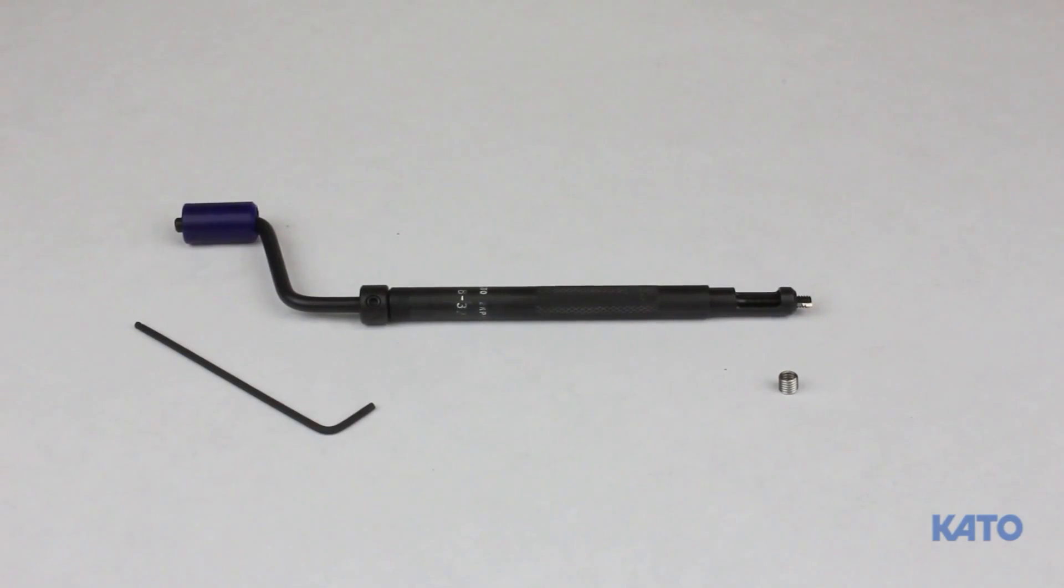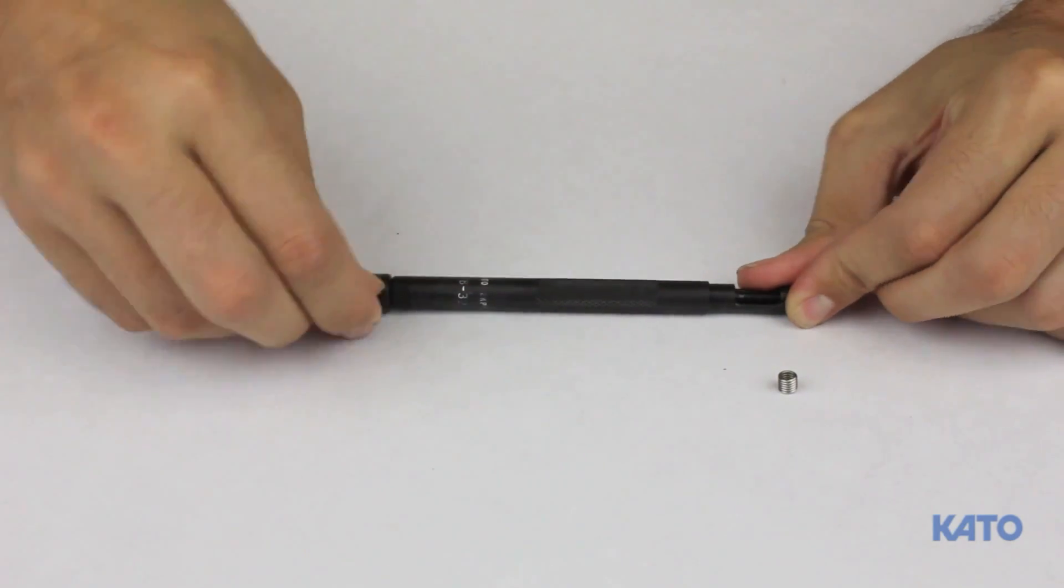Now we'll demonstrate how to set the correct installation depth using the tangless installation tool. The procedure is the same for tang. Loosen the depth adjusting collar using an allen wrench.